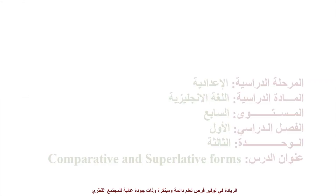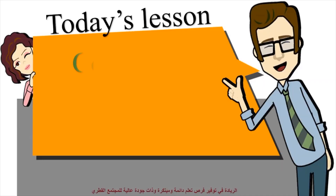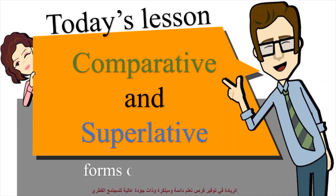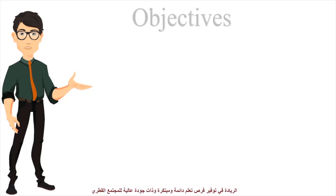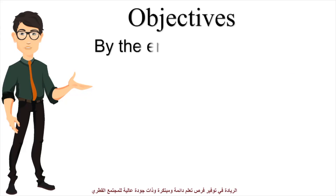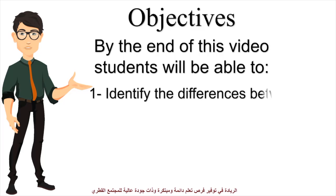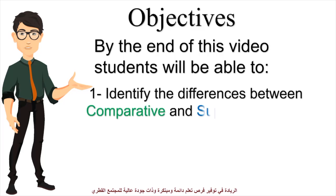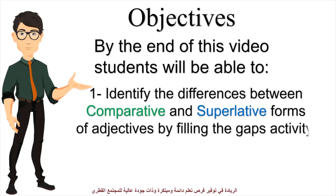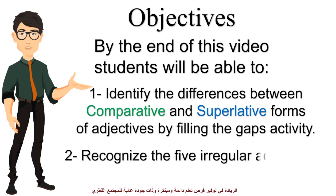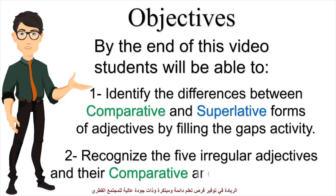Hi, dear students. Today's lesson is about comparative and superlative forms of adjectives. Let's begin with the objectives. By the end of this video, students will be able to: 1. Identify the differences between comparative and superlative forms of adjectives by filling the gaps activity. 2. Recognize the five irregular adjectives and their comparative and superlative forms.